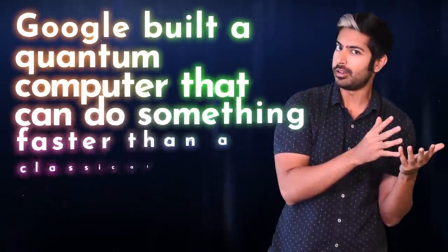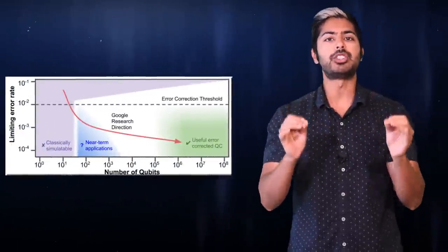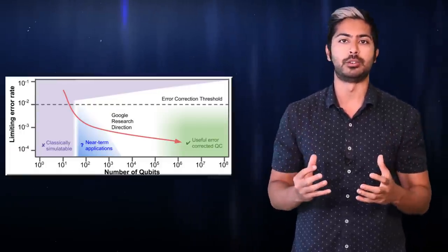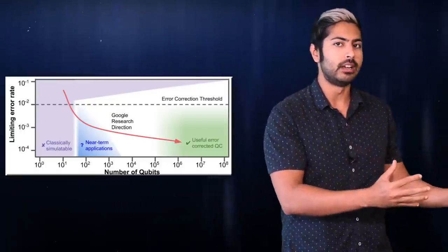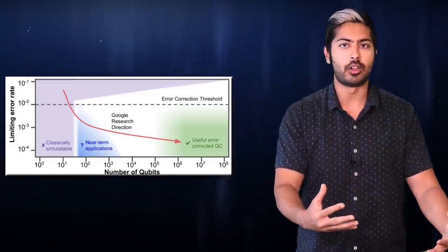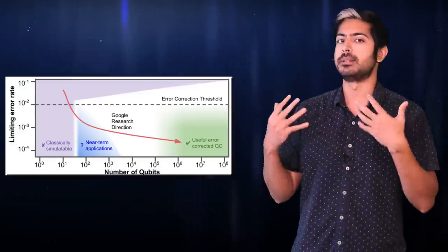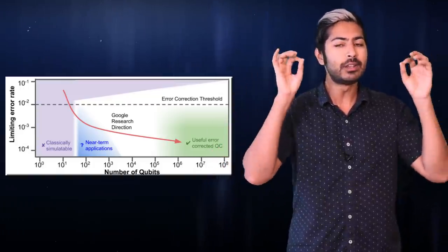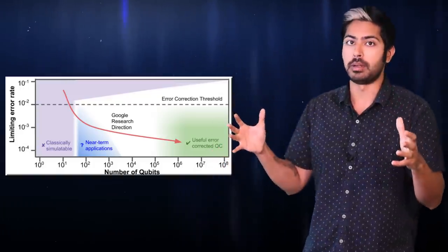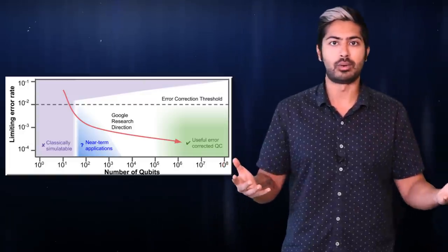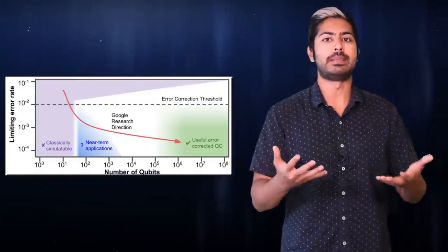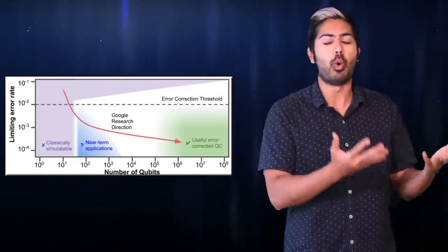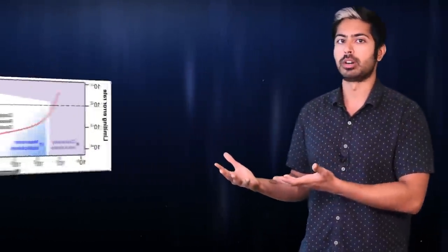But here's the key takeaway. Google built a quantum computer that can do something faster than a classical computer, not something useful. This was a sign of much-needed progress in this field because over the past 20 years, despite billions of dollars having been spent on quantum computing research, no quantum computer was used even once to solve any problem faster than a laptop could.